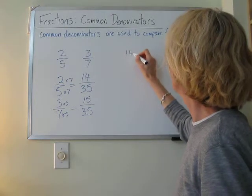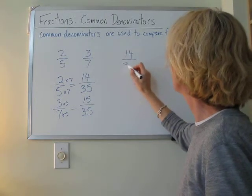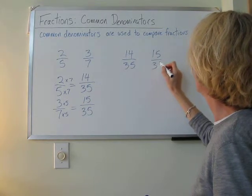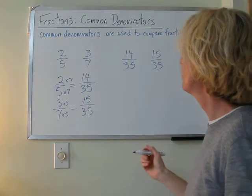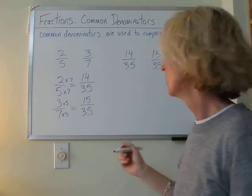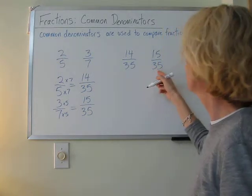14 over 35, and 15 over 35, and now we can tell which one is bigger. Which fraction is bigger? 3 sevenths. Yeah, 3 sevenths, so 15 over 35.